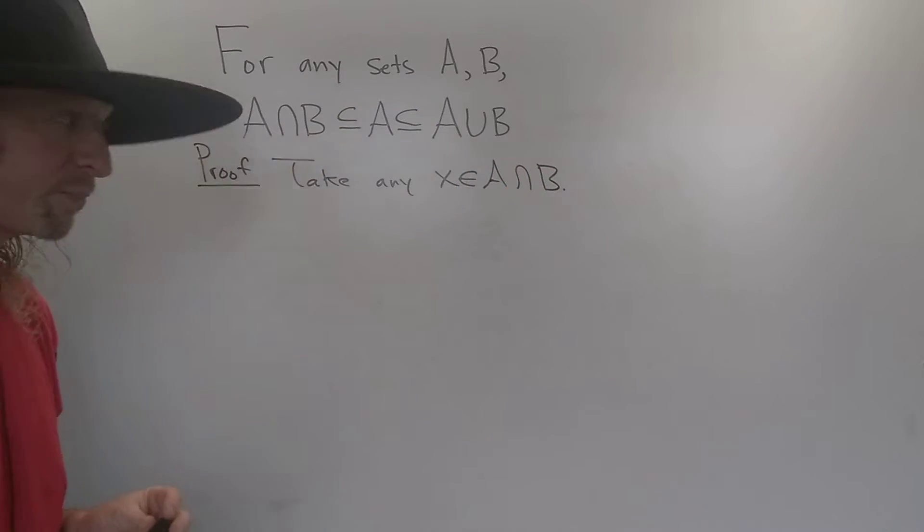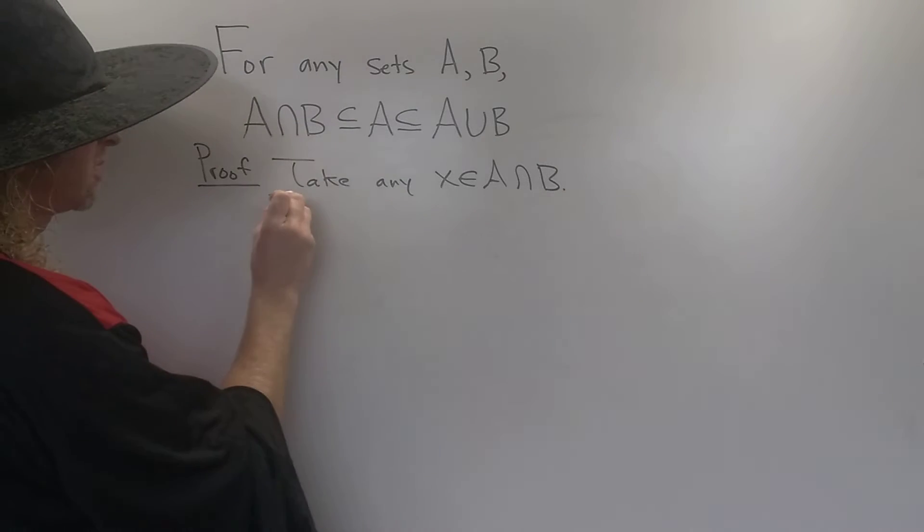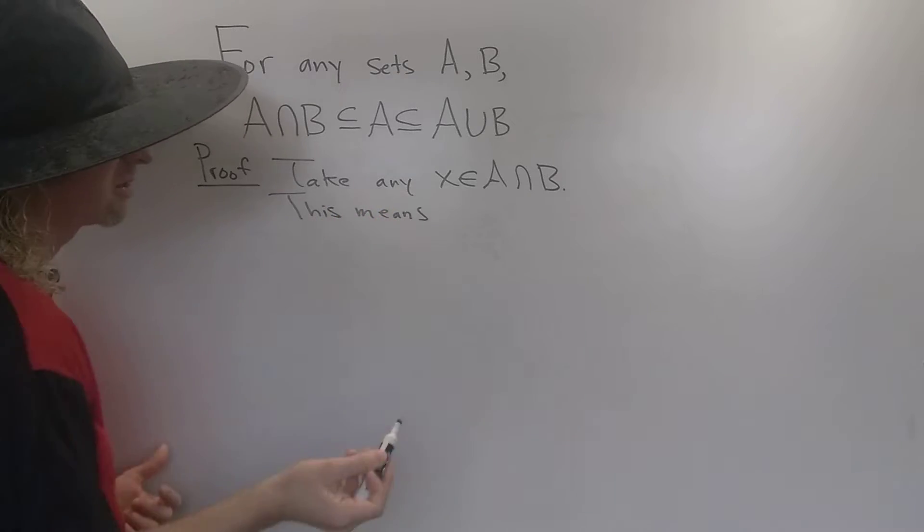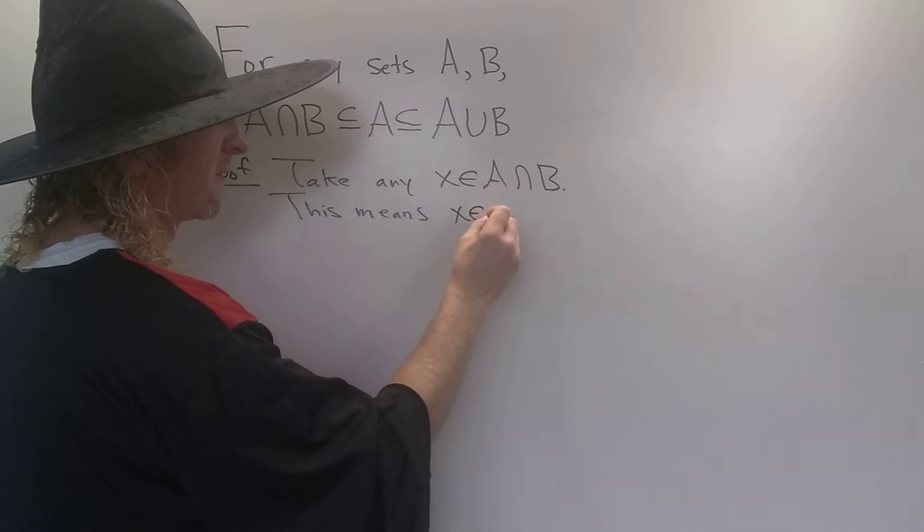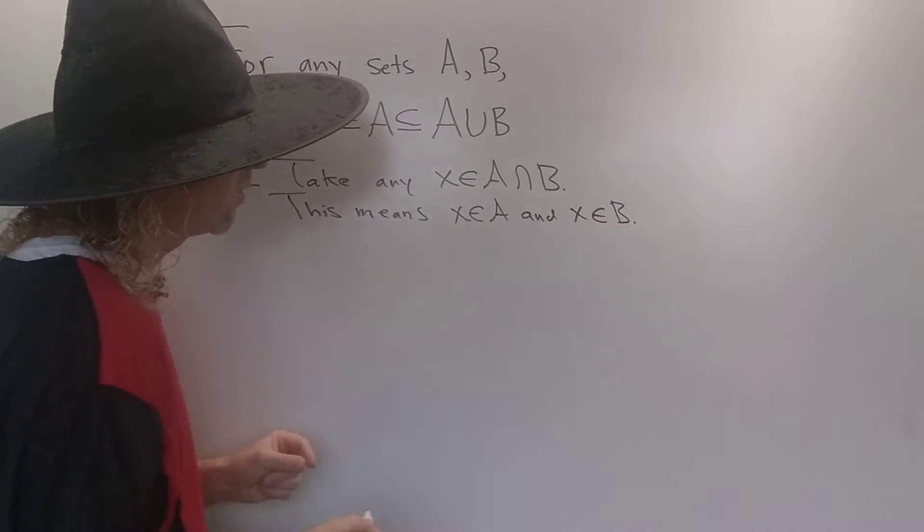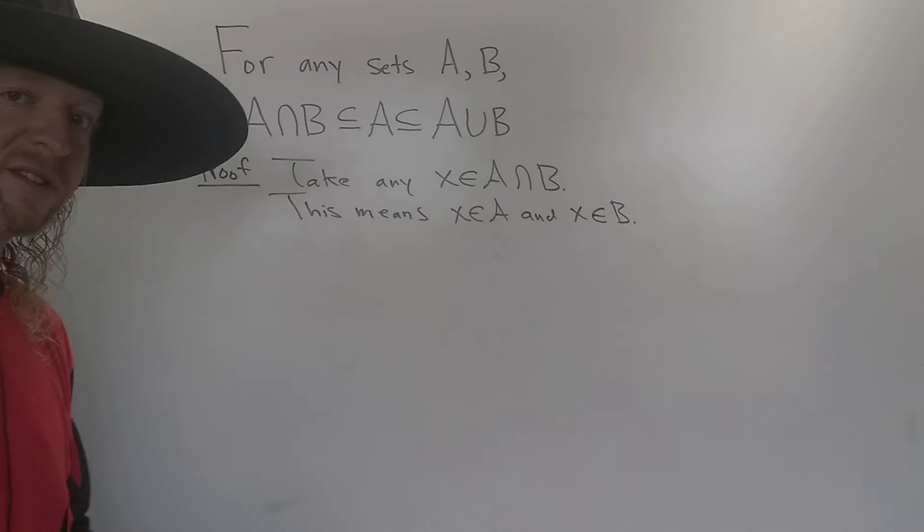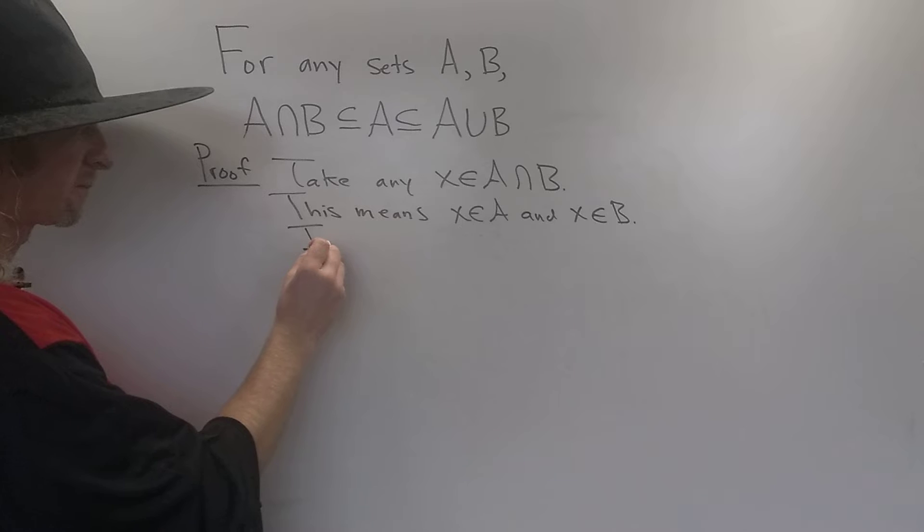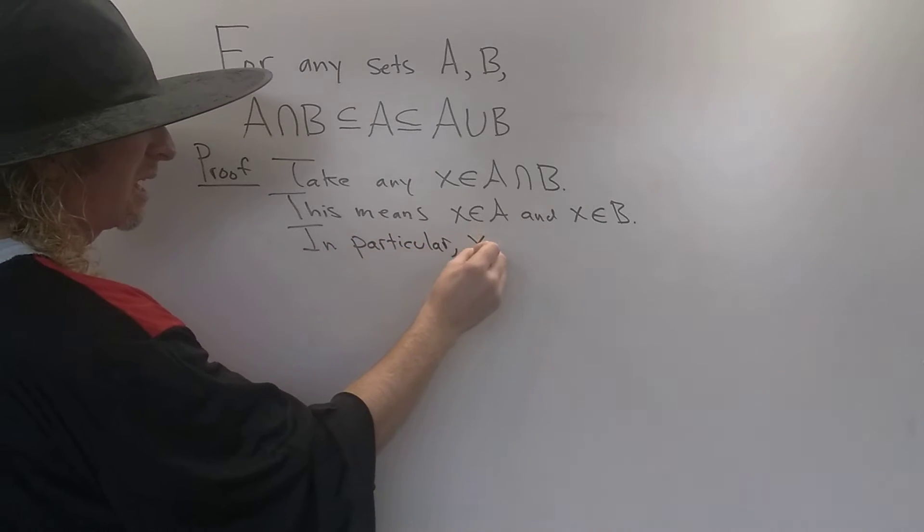And now we have to show that it's also in A. So now we use the definition of intersection. What does it mean for X to be in the intersection? Well, it means it's in A, and it's also in B. So this means X is in A, and X is in B. So we want to show it's in A, so it's already written here. So what we can do is emphasize that by using specific language. We can say something like, in particular, X is in A.